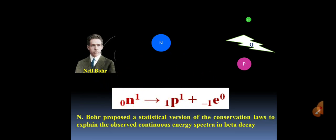This is nuclear reaction. Neil Bohr proposed a statistical version of the conservation laws to explain the observed continuous energy spectra in beta decay.